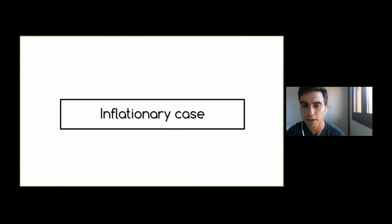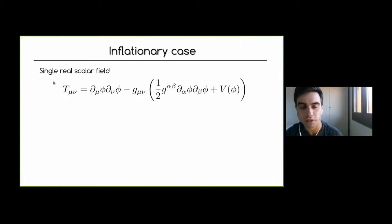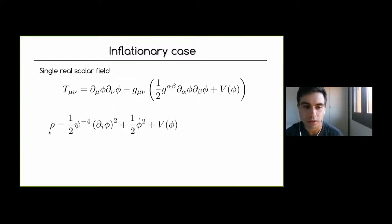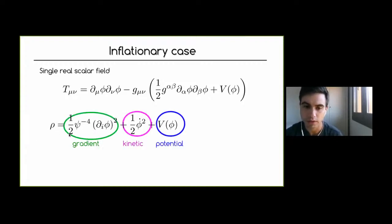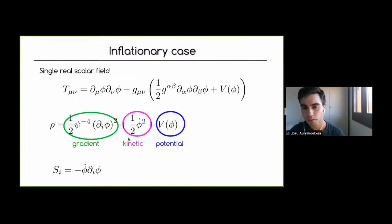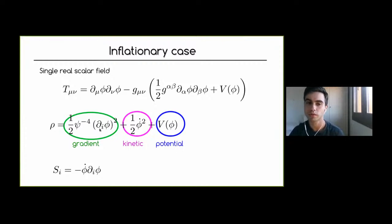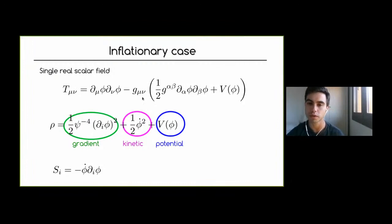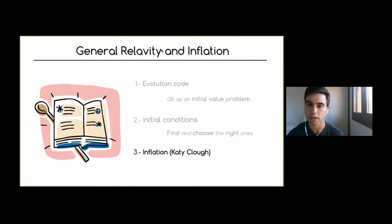For the inflationary case, we specify the energy-momentum tensor and compute the energy density, which has gradient, kinetic, and potential terms, and the momentum flux. Depending on the configuration — whether you put velocity phi-dot or gradients in the field — you will need to solve just the Hamiltonian constraint, or both the Hamiltonian and momentum constraints. This is where Katie will proceed.